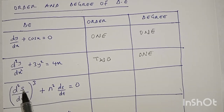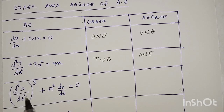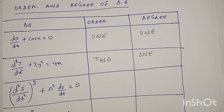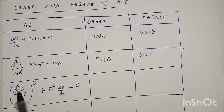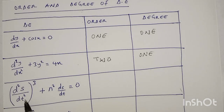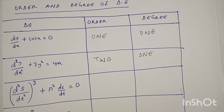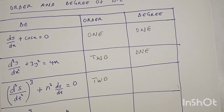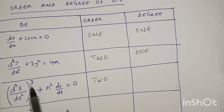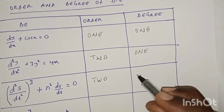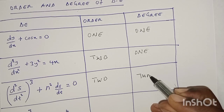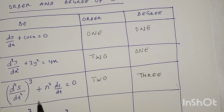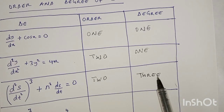Another differential equation is (d²s/dt²)³ + n²(ds/dt) = 0. In this case the highest derivative is d²s/dt², which is a second derivative, so this is of order 2. The degree here is 3 because it has power 3. So this differential equation is of order 2 with degree 3.